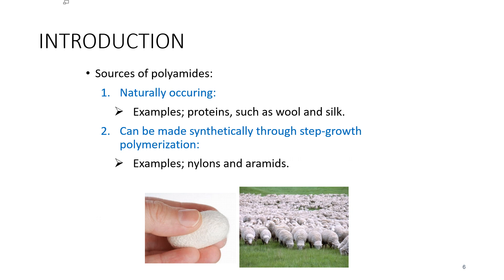Polyamide occurs both naturally and artificially. Examples of naturally occurring polyamide are proteins such as wool and silk. Artificially made polyamide can be made through step-growth polymerization or solid-phase synthesis, yielding materials such as nylon, aramides, and sodium polyaspartate. Synthetic polyamide are commonly used in textiles, automotive industry, carpet, kitchen utensils, and sportswear due to their high durability and strength.